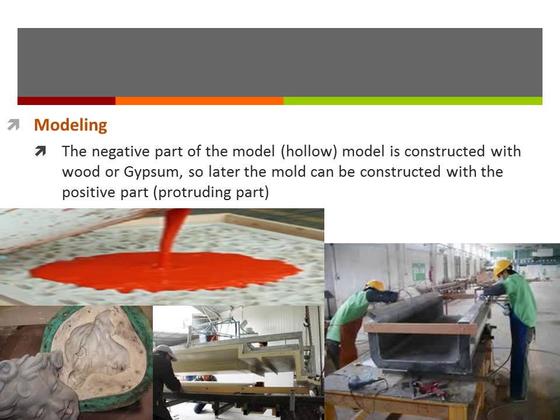This is the modeling phase. The negative part of the model — the hollow part — is constructed with wood or gypsum, so that later the mold can be constructed with the positive, protruding part.